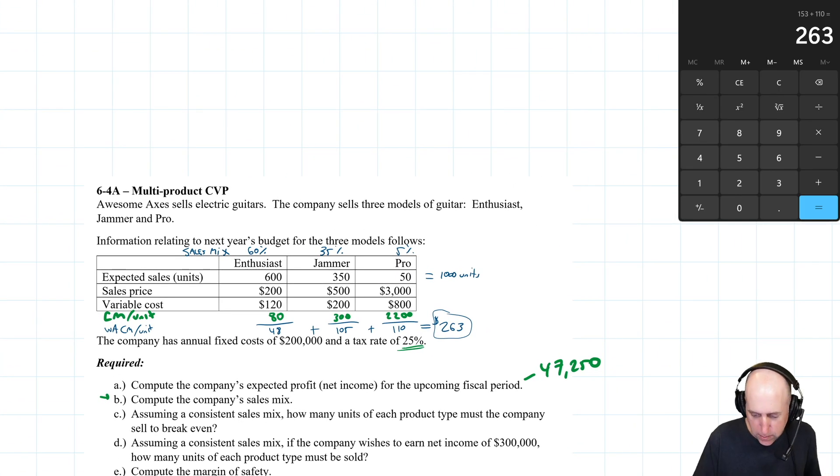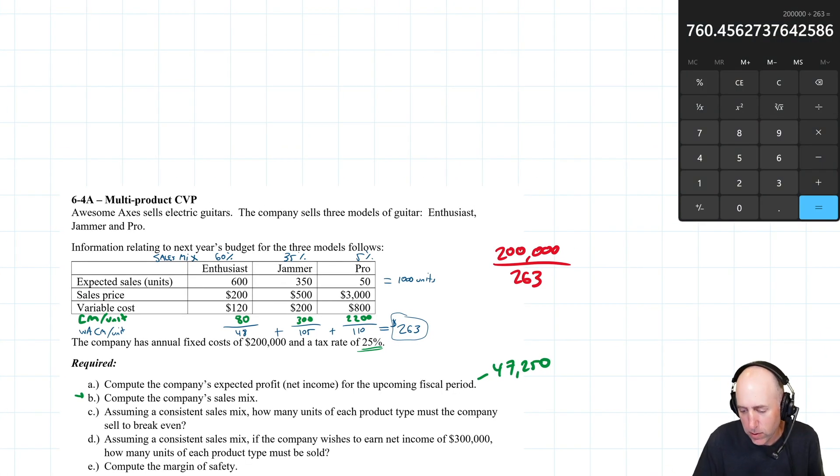Our formula is: fixed expenses, which were 200,000 dollars, divided by CM per unit, which is 263. 200,000 divided by 263 gives us 760.5 units. We round up to 761 units - that's what I need to sell to break even. But the question asks for how many units of each product type, so I have to apply my sales mix to that number.